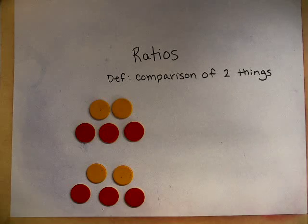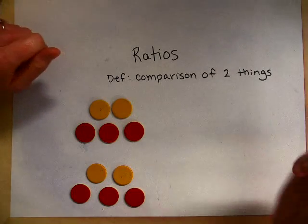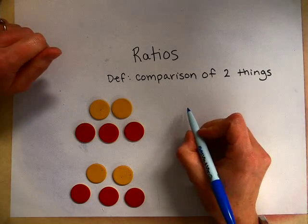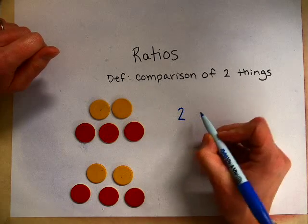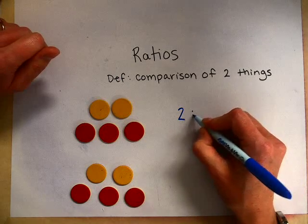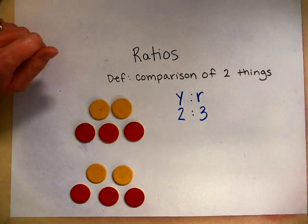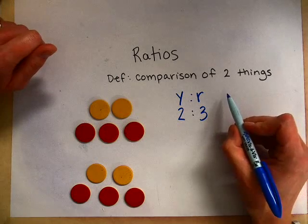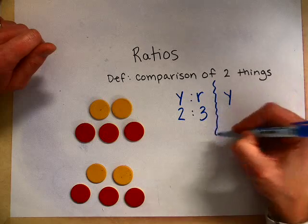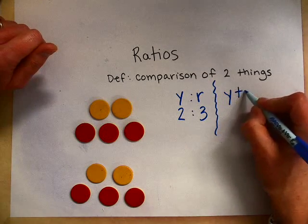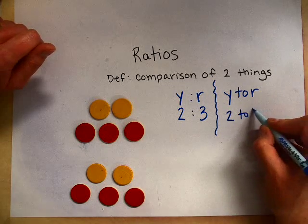There are three ways to write ratios. One way you'll be using most of the time, but I'll show you all three ways. You can write a ratio with a colon. So two yellow to three red: yellow to red. You can also write it with the word 'to'. So yellow to red, which would be two to three.